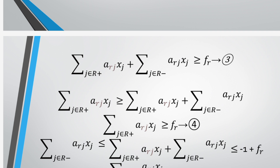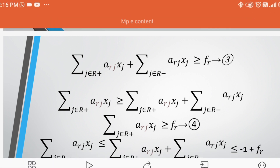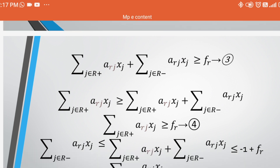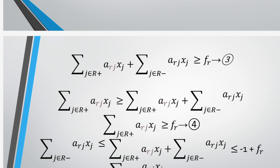Case 1: If f_sub_xr plus i is positive, then from equation 2 we have summation j in R+ of Arj·Xj plus summation j in R- of Arj·Xj greater than or equal to f_sub_xr. Note that this is equation 3. Since Arj belongs to R- and is also non-positive for all Xj greater than or equal to 0, we can write summation j in R+ of Arj·Xj greater than or equal to summation j in R+ of Arj·Xj plus summation j in R- of Arj·Xj. Then summation j in R+ of Arj·Xj greater than or equal to f_sub_xr by equation 3. This is equation 4.